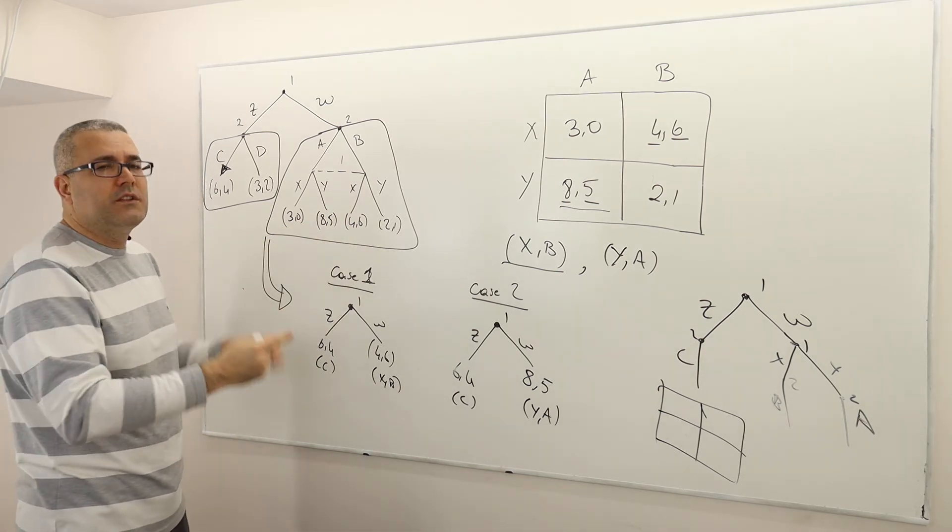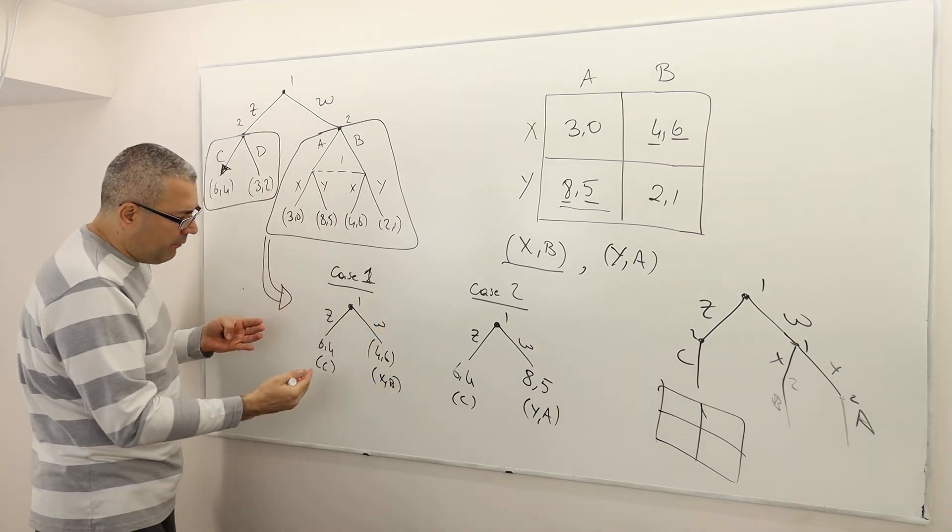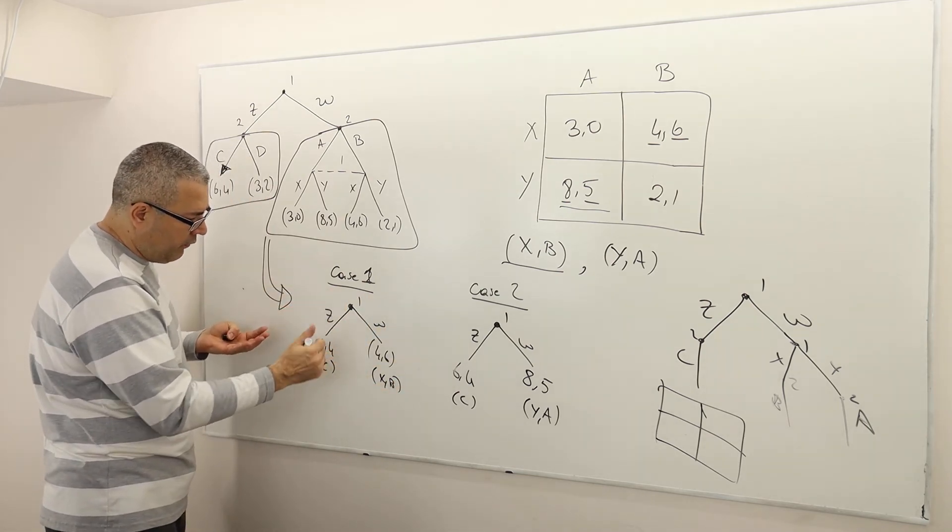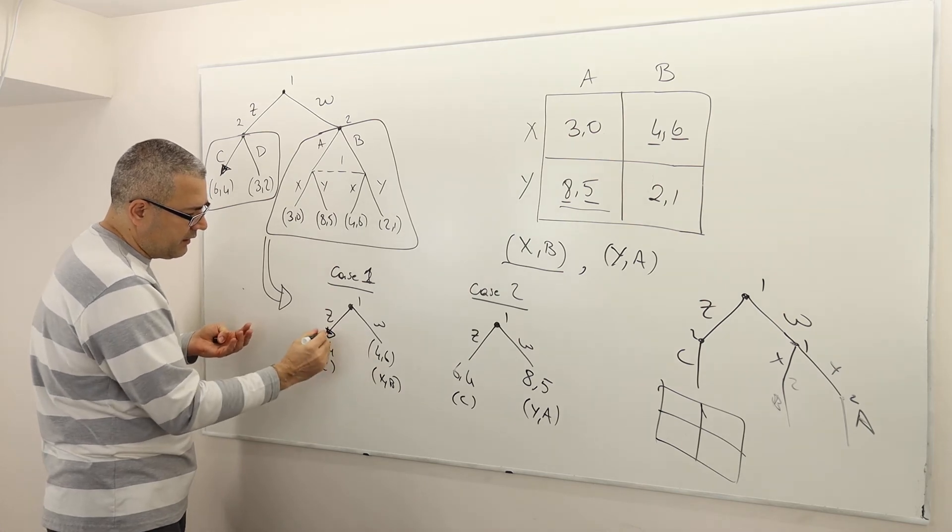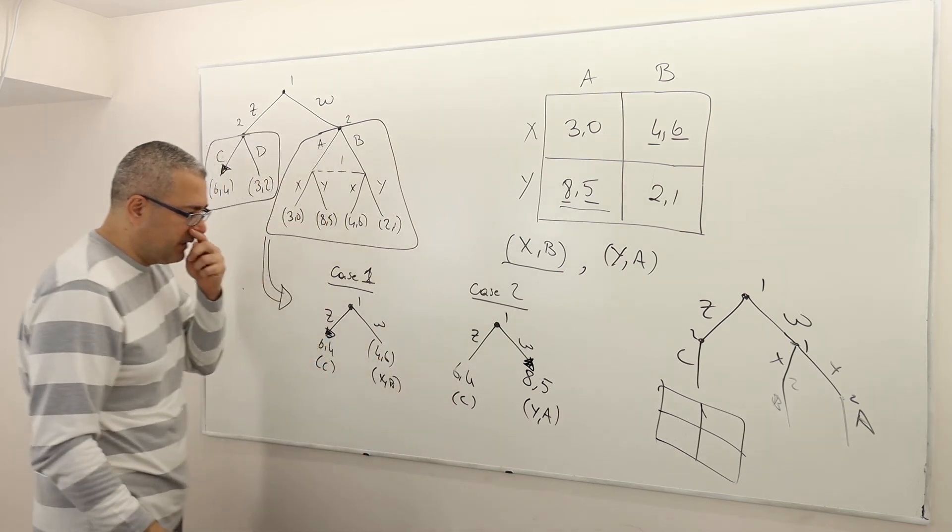Alright? So that's very, very important. So let's finish the analysis. So here, in this case one, obviously player 1 is going to go for Z because 6 is higher than 4. And here, obviously, he's going to go for W because 8 is higher than 6.